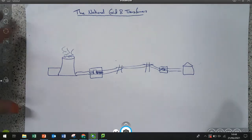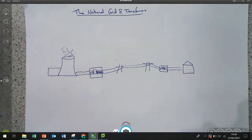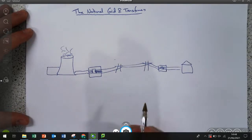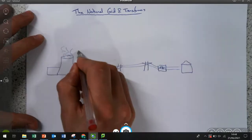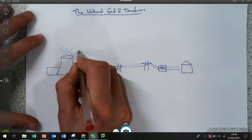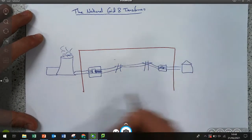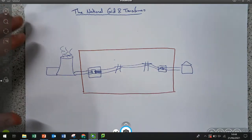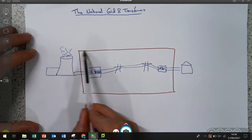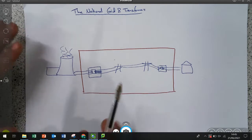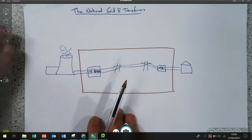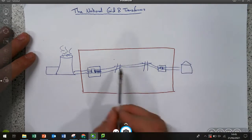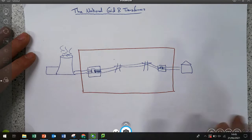In this video we are going to look at the national grid and transformers for GCSE physics electricity. When we talk about the national grid we are talking about the system of wires and transformers that is responsible for getting electricity from the power station to our homes. So the national grid is really this bit inside the red box here. It's the transmission cables and the transformers.